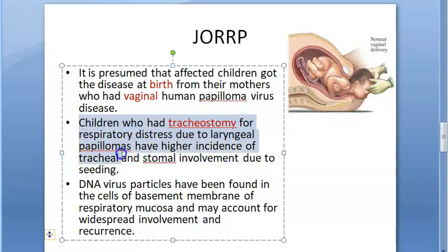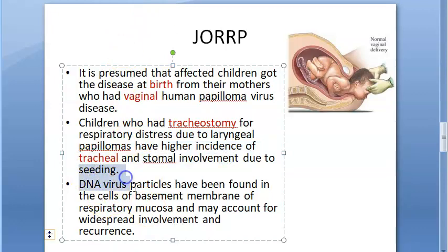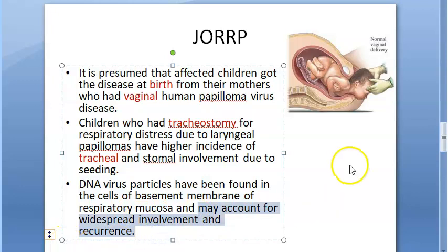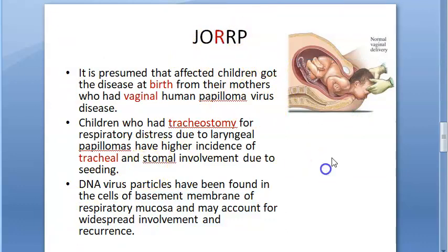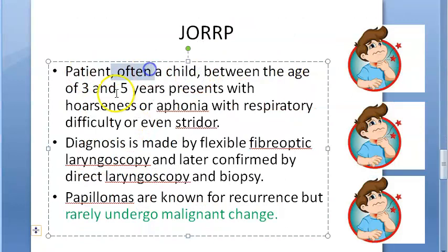Children who had a tracheostomy for laryngeal papillomas have a higher incidence of tracheal and stromal involvement. Additionally, DNA virus particles have been found in the cells of the basement membrane of the respiratory mucosa, which accounts for widespread involvement and recurrence — this is why it keeps recurring.